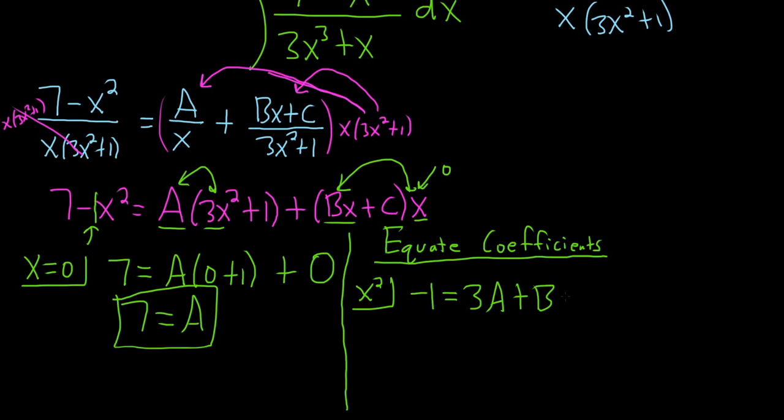So this implies that negative 1 is equal to 3 times 7 plus B. So negative 1 is equal to 21 plus B. Oh this is beautiful. Subtracting 21 from both sides is going to give us B equals negative 22. I'm going to put that in a box because that is a major accomplishment.